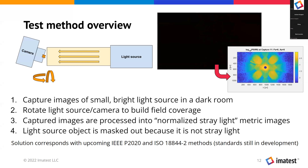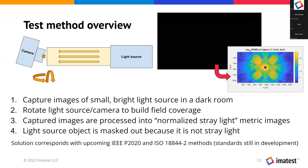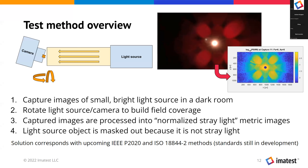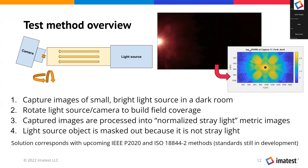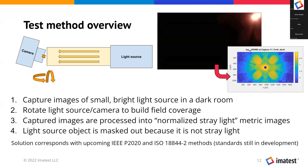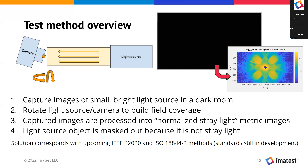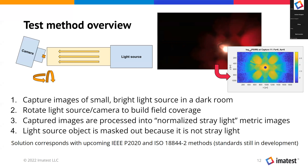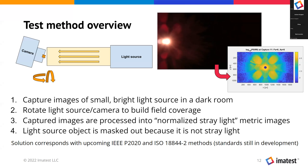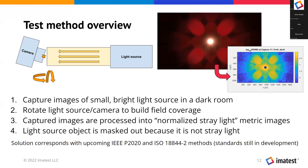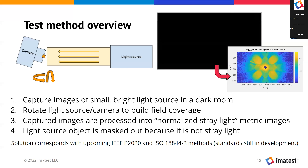The captured images are then processed into what we call normalized stray light metric images. In these metric images we mask out the light source itself, because that is not considered to be stray light. 所以在多个拍摄这个不同的点光源在整个视场里面，然后我们就把这叫做杂闪光统一化的图像。但是在我们测试的时候，不把这个点光源放进去作为杂闪光的本身，因为它本身并不是杂闪光，所以它要被遮盖起来。